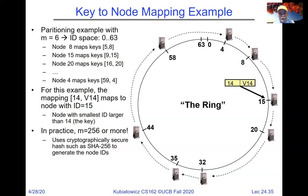There are questions about who tracks all of this — we'll address that in the next few slides. The meaning of m is the number of bits in the key space, typically something like 256. And what's happening to node 14 in this example — that will also be explained shortly.